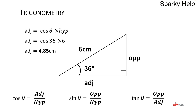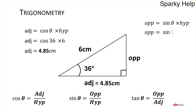Now we want to find the opposite. We have more of a choice now because we know two sides, but we'll use the sine. Sine equals opposite over hypotenuse, so the hypotenuse becomes a multiply. Sine of 36 multiplied by the hypotenuse, which is 6, gives us a value of 3.53 centimetres. We could also have used the tangent multiplied by the adjacent — tan of 36 times 4.85 — but it's your choice.